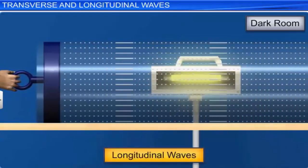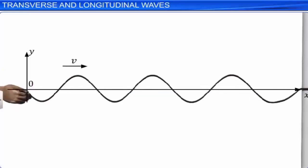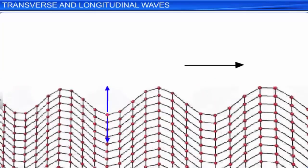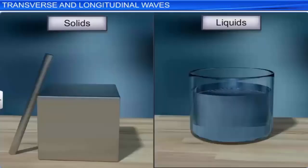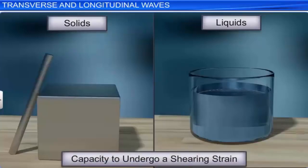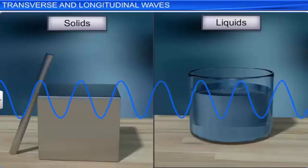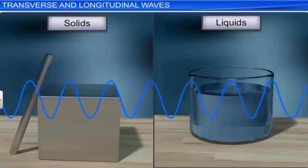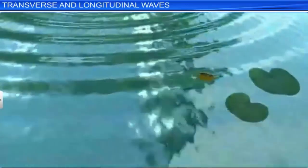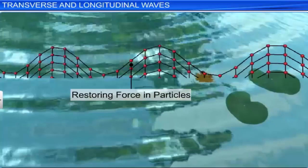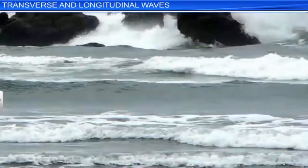In a transverse wave, as the wave propagates, each element of the medium undergoes a shearing strain. Elements in solids and liquids have the capacity to undergo a shearing strain. Therefore, transverse waves can propagate through solids and liquids. Transverse waves on the surface of still water are called capillary waves, whose wavelength measures in centimeters only. The restoring force that allows the propagation of these waves is the surface tension of water. Waves formed on the surface of the sea are transverse waves called gravity waves, whose wavelength is of the order of meters. The restoring force in these waves is the gravitational pull on the water.